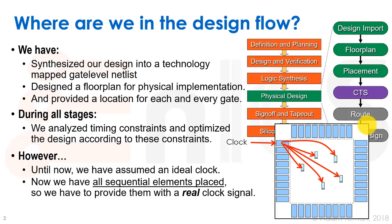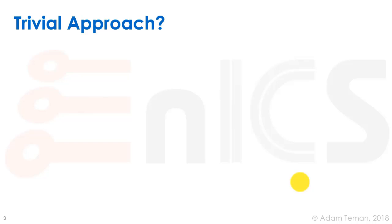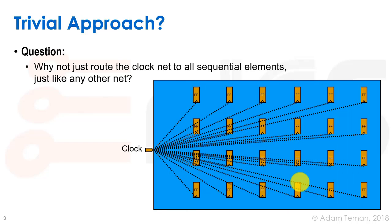In this lecture, we're going to actually discuss what a real clock signal is. We have all the sequential elements placed — flip-flops around the design, and possibly hard macros with clock inputs — and now we have to provide an actual clock signal to all of them. So what's the trivial approach? Why don't we just route the clock net like any other net, bringing it to each flip-flop in a general way?